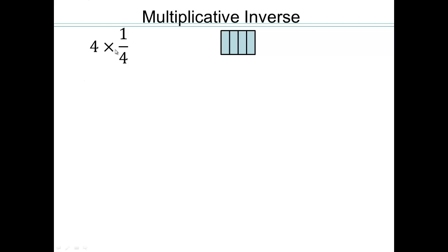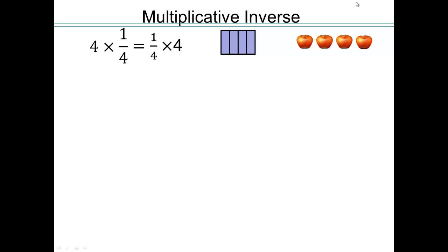Let's do 4 times a quarter. We want 4 copies or 4 groups of 1 quarter. So we have 1 quarter and we have 4 of those: 1, 2, 3, and 4. If you have 4 copies of a quarter added together — repeated addition — you get a whole, because 4 quarters make a whole. For 1 quarter times 4: we have 4 apples and take a quarter of that, giving us 1 apple. So 1 quarter times 4 is 1.